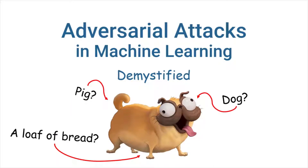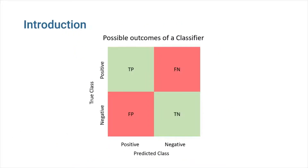Hello, today I want to talk about adversarial attacks in machine learning. A classifier, as you would know, can generate four different outcomes: true positive, true negative, false positive, and false negative. If these words are unfamiliar to you, I recommend watching my video on classification metrics and evaluation.